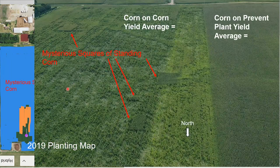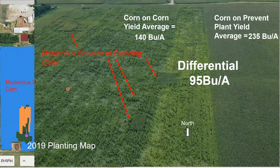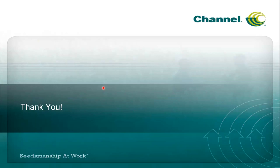The question I always get when I show this is: how costly was this for the grower? It was actually pretty costly. The corn-on-corn yield average was 140 bushels, but where they had prevent plant the previous year and rotated, they were at 235 — about a 95 bushel per acre difference. Plus, as you can see, harvesting that lodged corn was not a fun process.